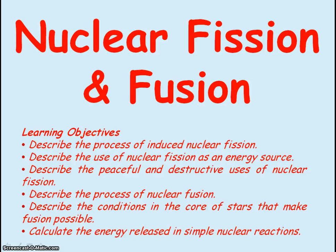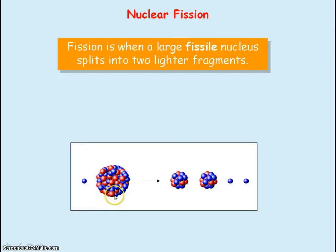We're going to be looking at nuclear fission and fusion. Fission occurs when a large nucleus splits into two lighter nuclei together with some neutrons being emitted, could be two or three neutrons.